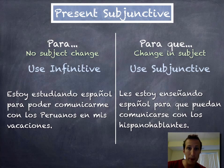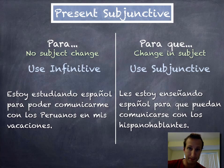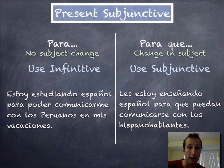If I am doing something for myself, then I don't have a subject change. That's where this example on the left comes in: 'Estoy estudiando español para poder comunicarme con los peruanos en mis vacaciones.' I am studying because I want to speak to the Peruvians on my vacation. Since it's I and I, that's not a change — same subject all the way through. We just use 'para'. I would never say 'yo estoy estudiando para que yo.' Since it's the same, I just use 'para'.